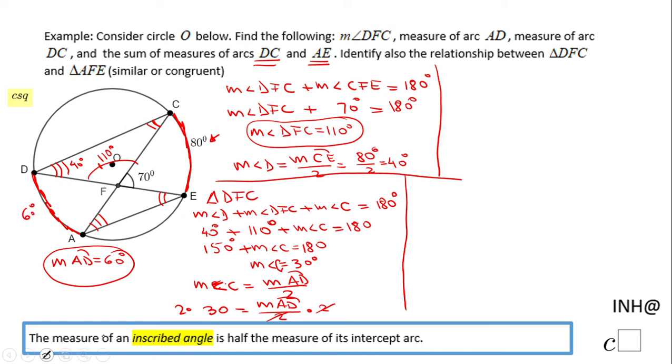So the sum of the measure of these two arcs, arc DC and AE, can be found using this relation: the measure of arc AD plus the measure of arc DC plus the measure of arc EC plus the measure of arc EA. If we add these four arcs, we get the whole circle, which is 360 degrees.